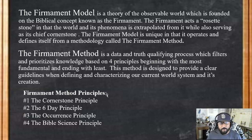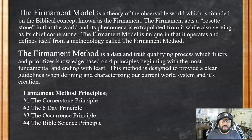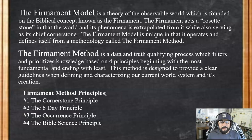All four principles apply the Bible in a literal way. There's the Cornerstone Principle, the Six-Day Principle, the Occurrence Principle, and the Bible Science Principle. I'm going to briefly explain what these are and then we're going to get to what the Bible actually says about the nature of our world.